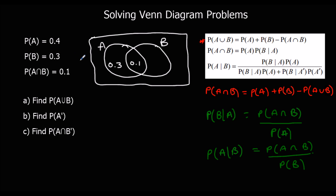The probability of B is 0.3; we've already got 0.1 in the B circle, so we need another 0.2. So far we've got 0.6, so the outside — neither A nor B — must be whatever is left to make 1. The outside must be 0.4.